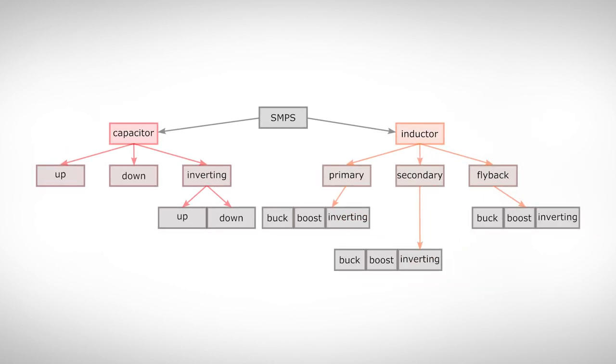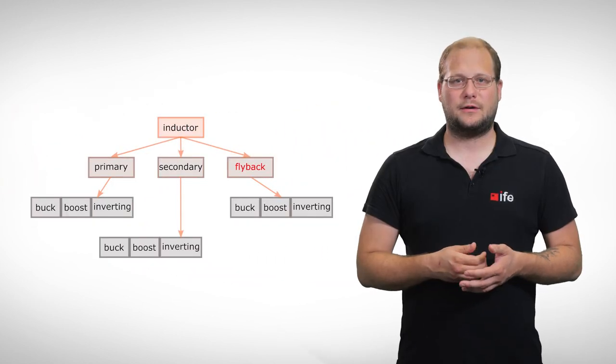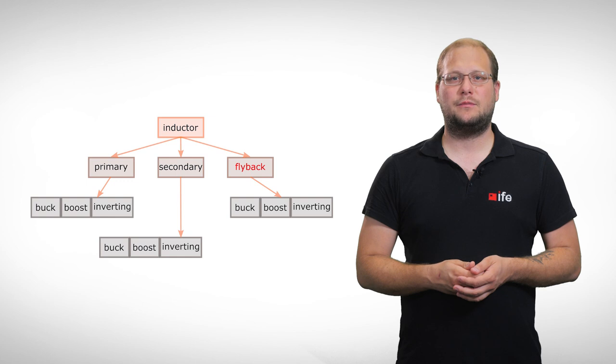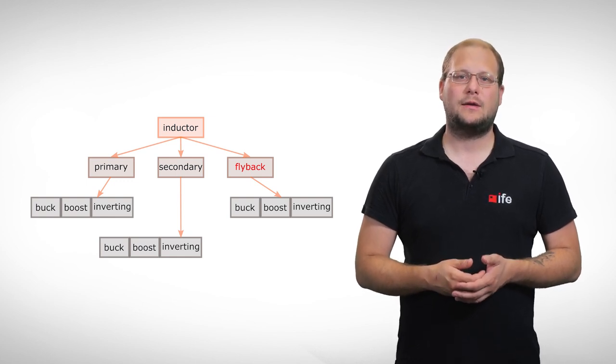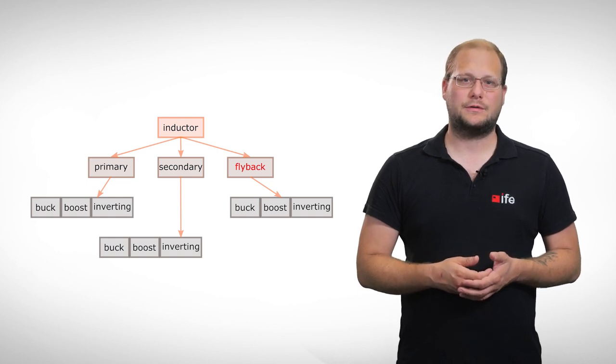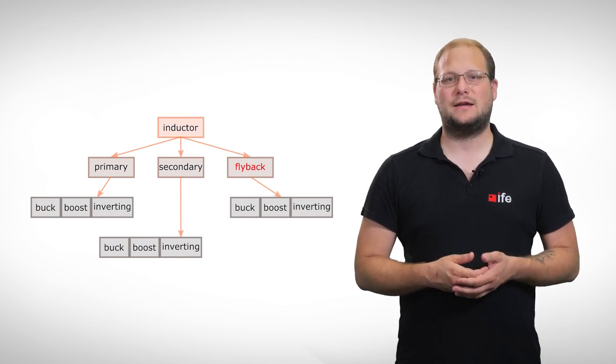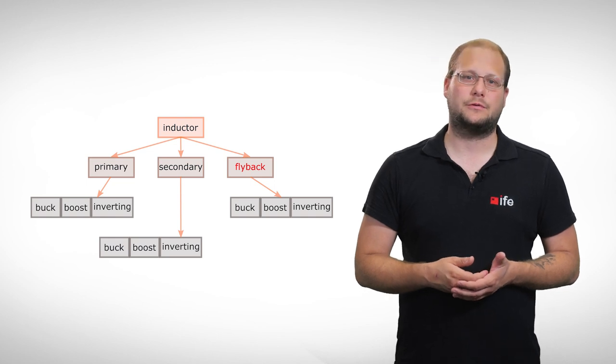A third type of switched mode power supplies are flyback converters. They use magnetically coupled inductors to transform energy between the primary and secondary side of a transformer. They can therefore be used as step up and step down converters. The transformer serves simultaneously as the inductor and often has an air gap so that more magnetic energy can be stored.